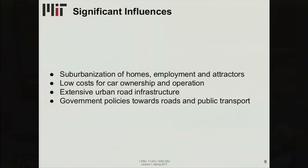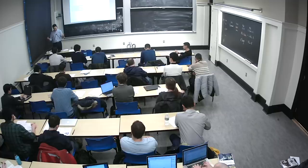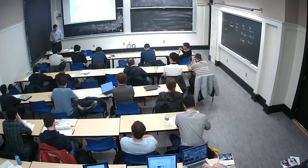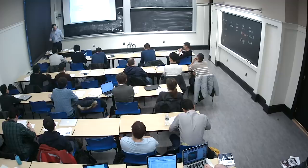What influences these trends? First one, and very obvious, is the suburbanization of homes, employment, and attractors. People moving away from cities to lower dense areas because property is cheaper and parking might be free. In America, low costs for car ownership and operation. So we have low fuel taxes in comparison to other parts of the world and low taxes when you buy cars. There's an extensive urban road infrastructure that is much higher than it is in other parts of the world. And there are many government policies that support the road construction and maintenance and the use of roads in the private automobile and not necessarily to the same extent support public transportation. These include things like tax benefits that you can take on your return, parking requirements when there is new construction that support the private auto.